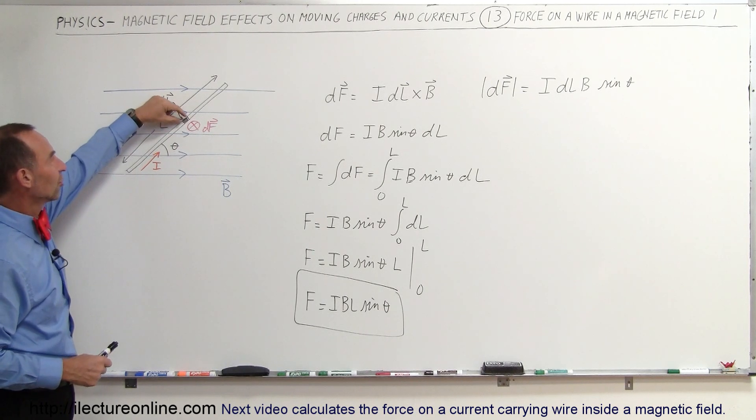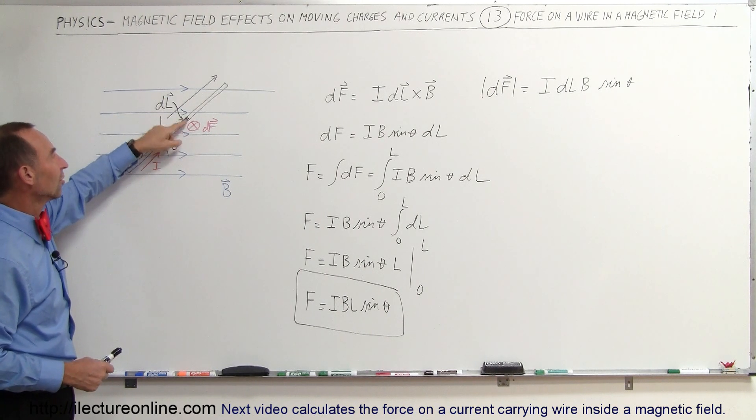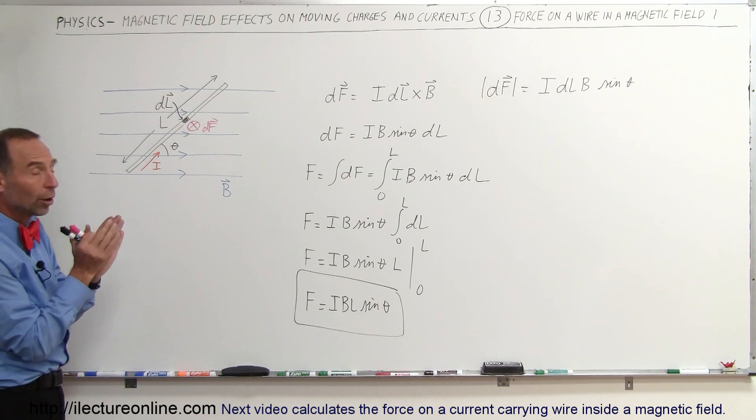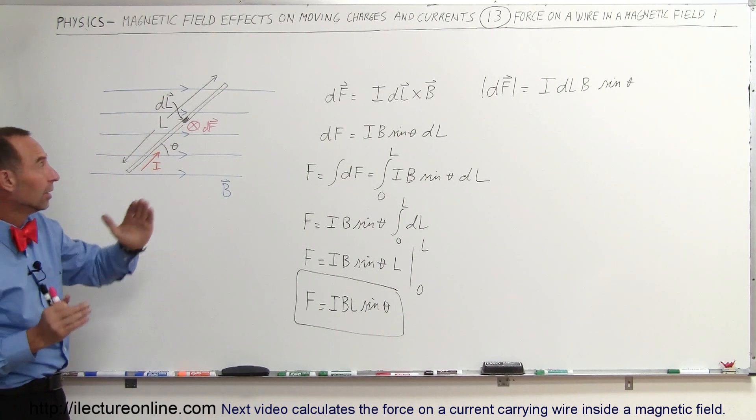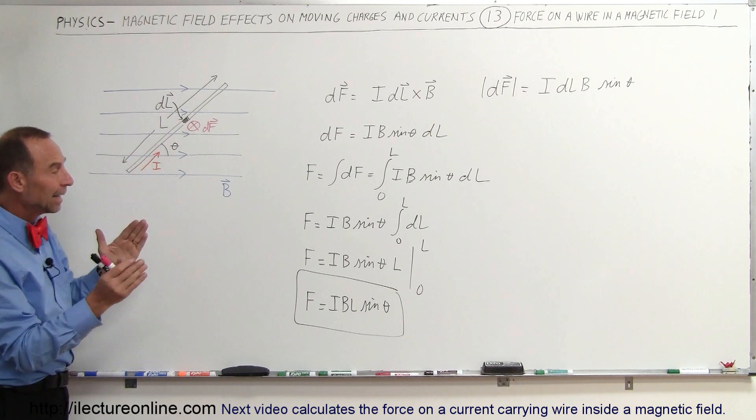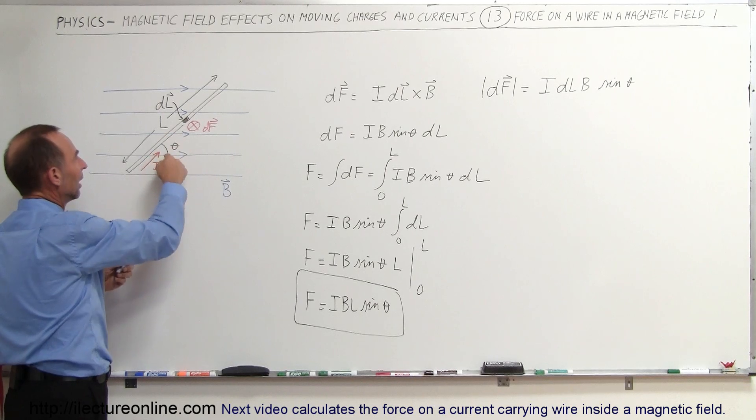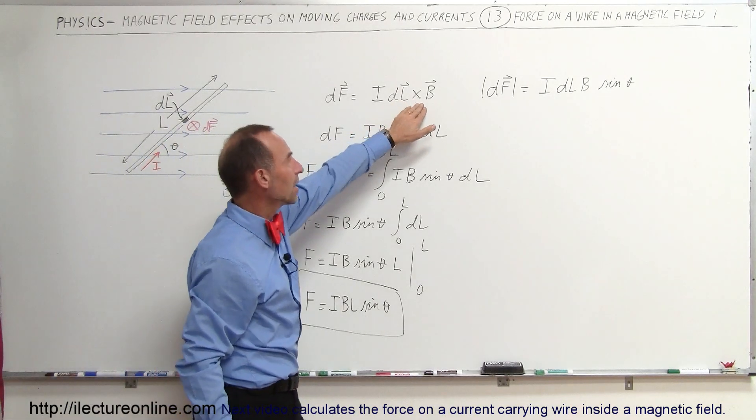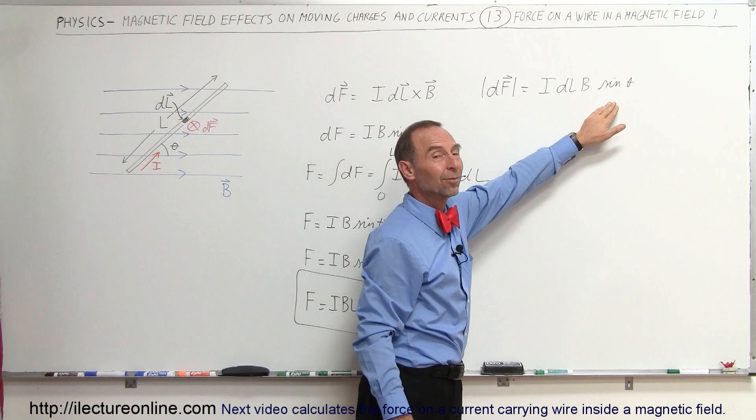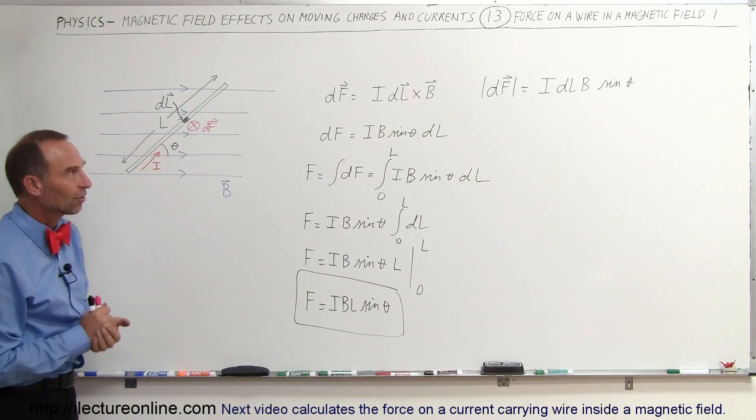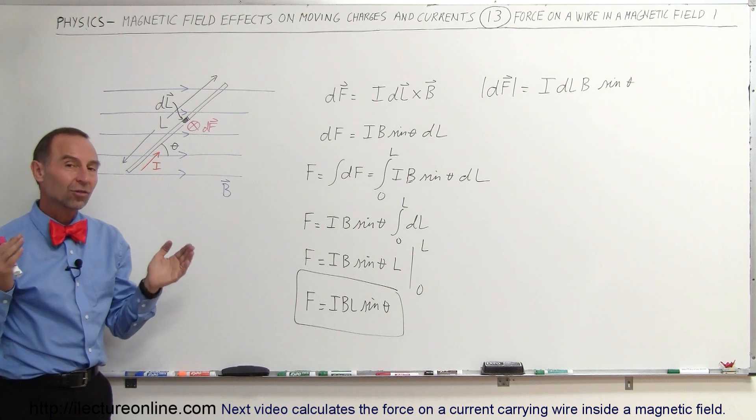Basically what you do is take a small element—you know the current through it is I, you know the length is dl, you want to know the direction of dl because you want to know the angle between the direction of the current and the direction of the B field. And you can see the angle here is theta, and so when you do the cross product dl cross B, that's the same as dl times B times sine of the angle between the two directions. And that's how we find the force on a wire inside a magnetic field, starting with a straight wire simple example.